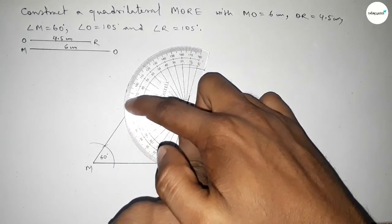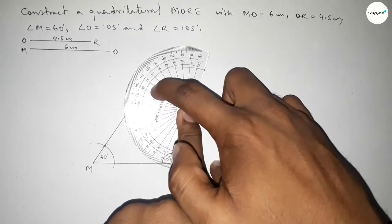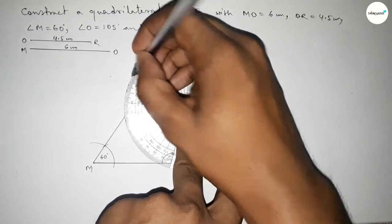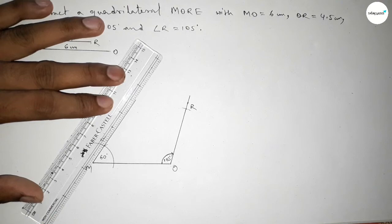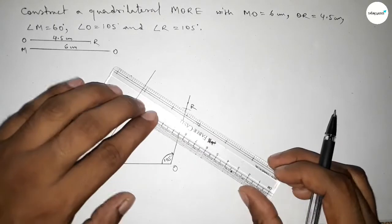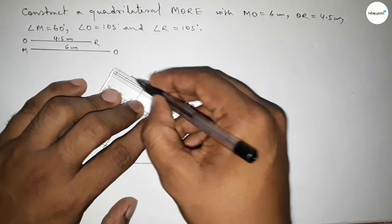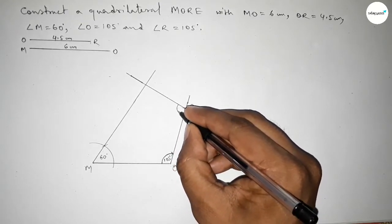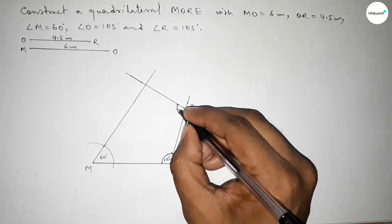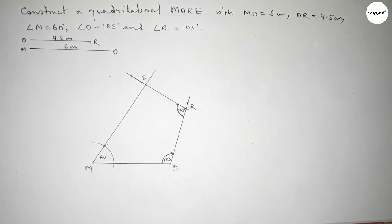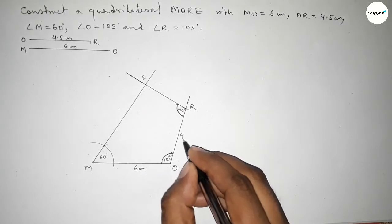Counting the angle 105 degrees — this is 100 and this is 105 degrees. Marking 105 degrees at R, then extending and joining this line to get the 105 degree angle at R. Both lines intersect at a point E. This side is 6 centimeter and this side is 4.5 centimeter.